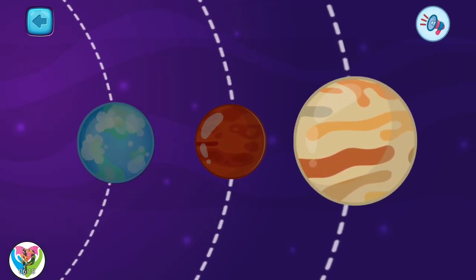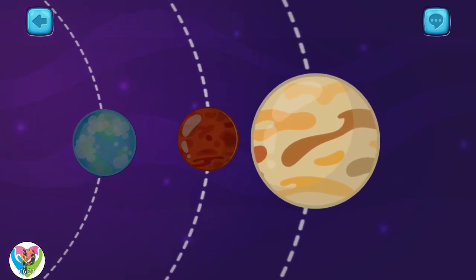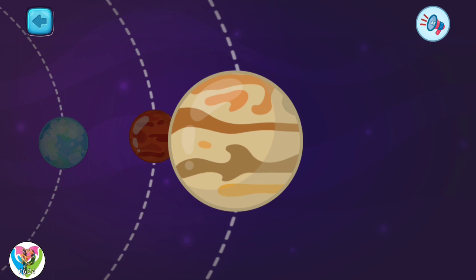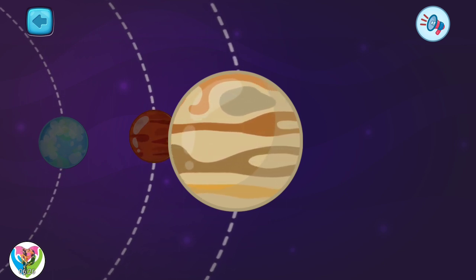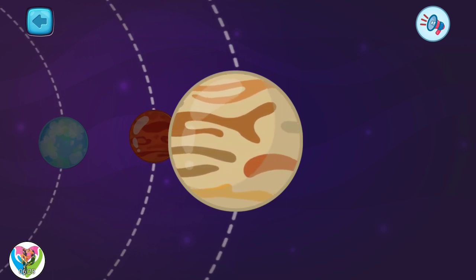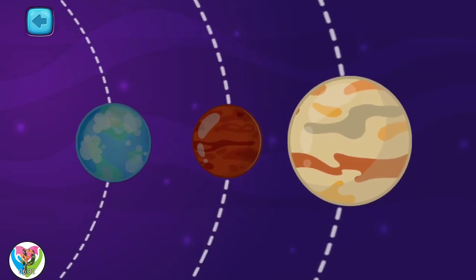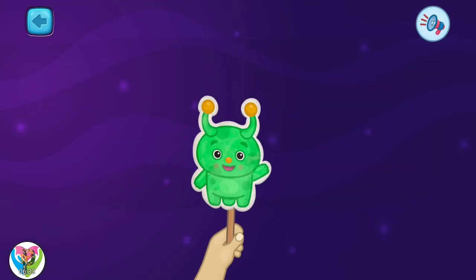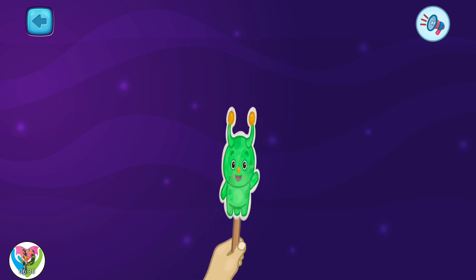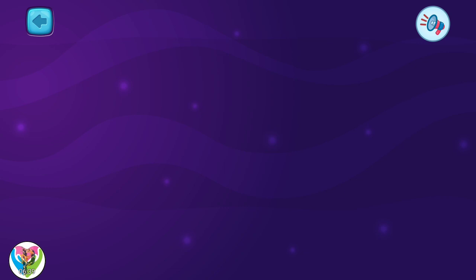Only one left. Pick it. This is the planet Jupiter. It is the fifth from the sun. Jupiter is the largest planet in our solar system. That's all for today. I will tell about other planets later. See you again.